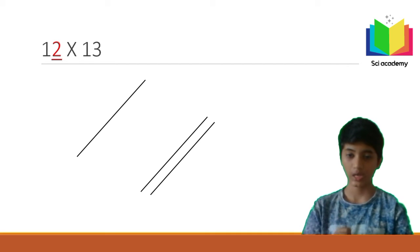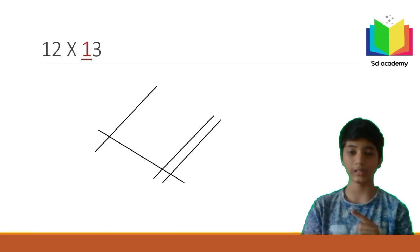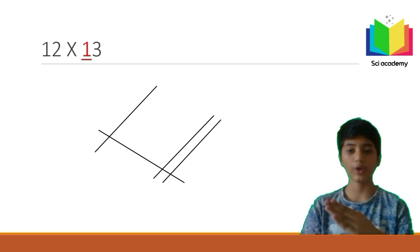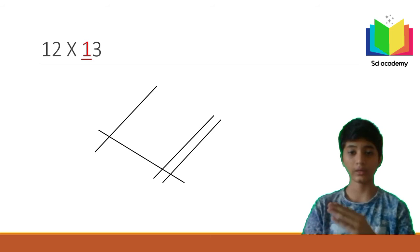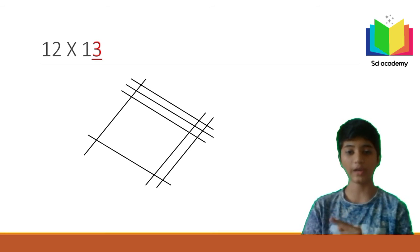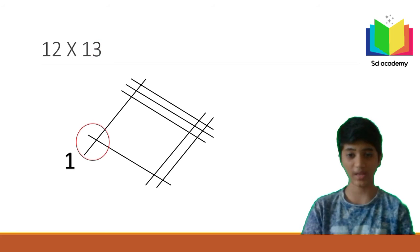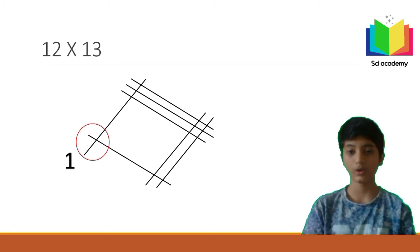Now for 13 — the first digit is 1, so draw one slanting line in the opposite direction. The second digit is 3, so draw three lines parallel to that first line of 13. Now we have a grid-like structure.